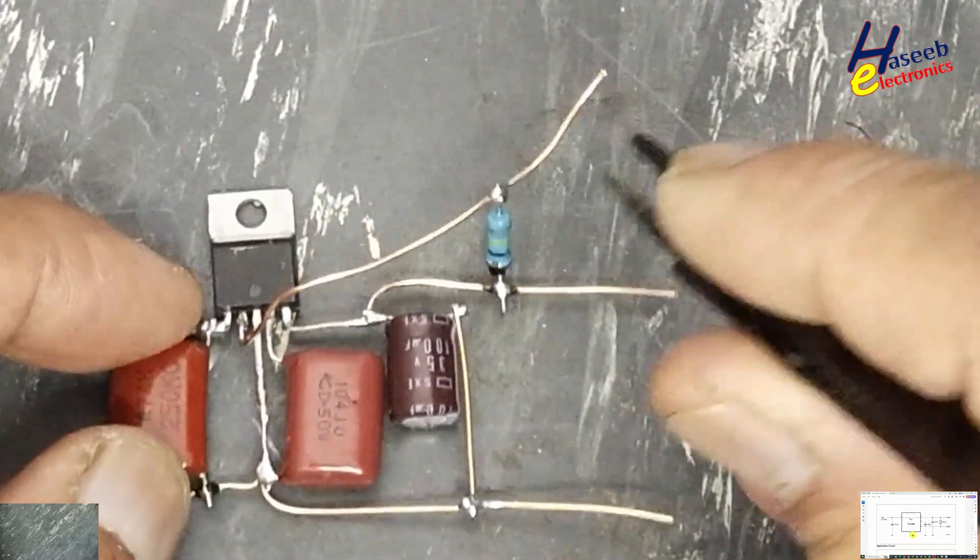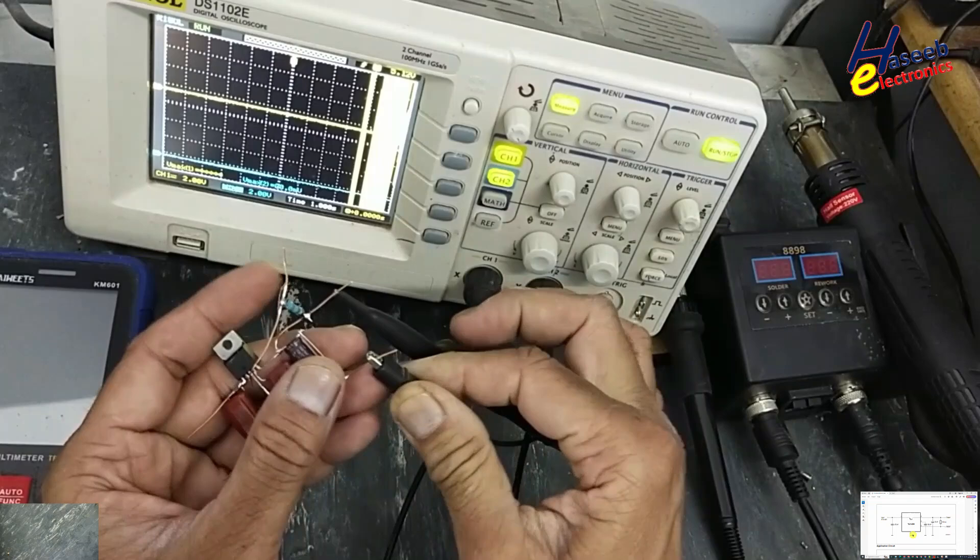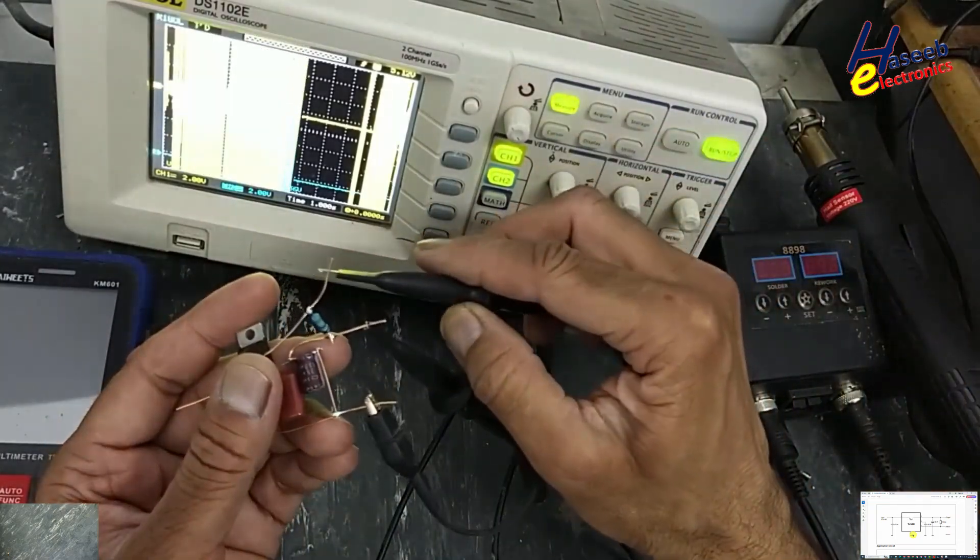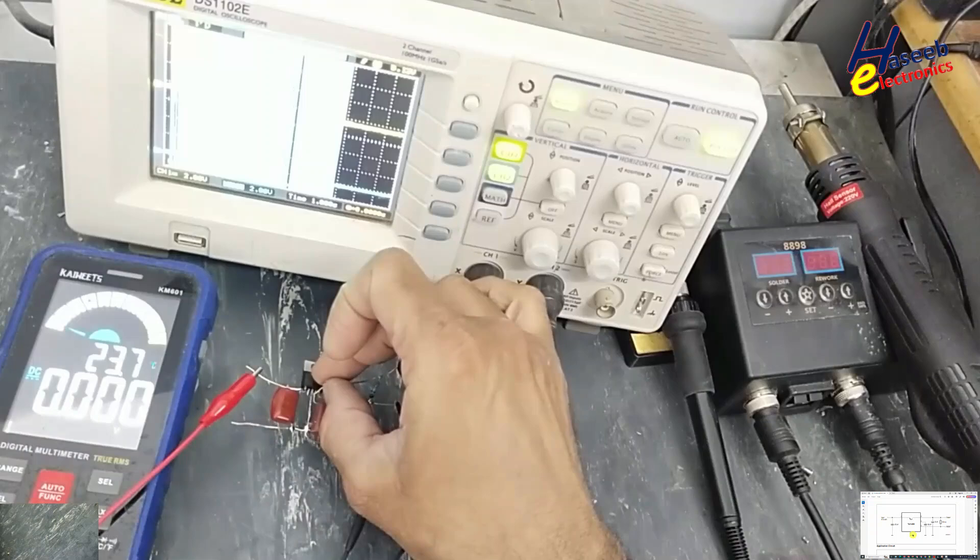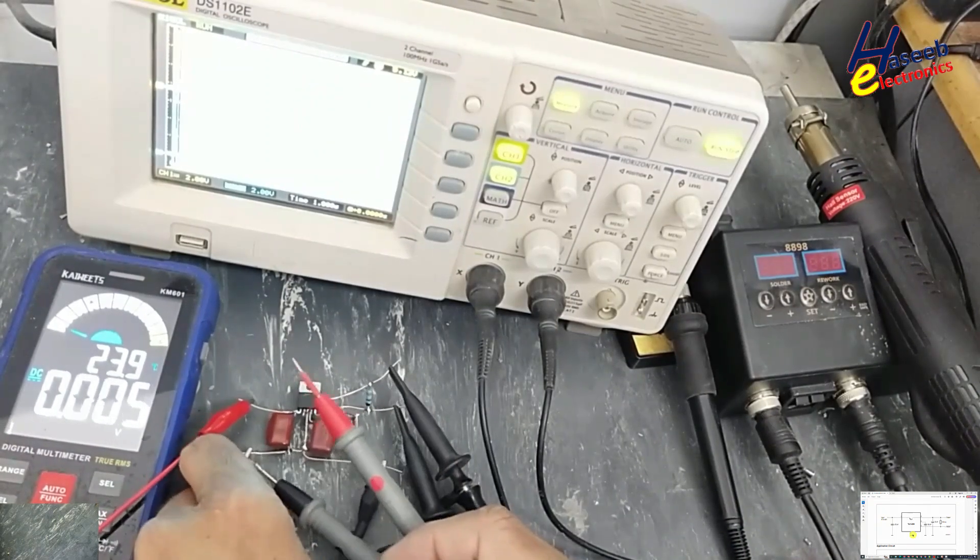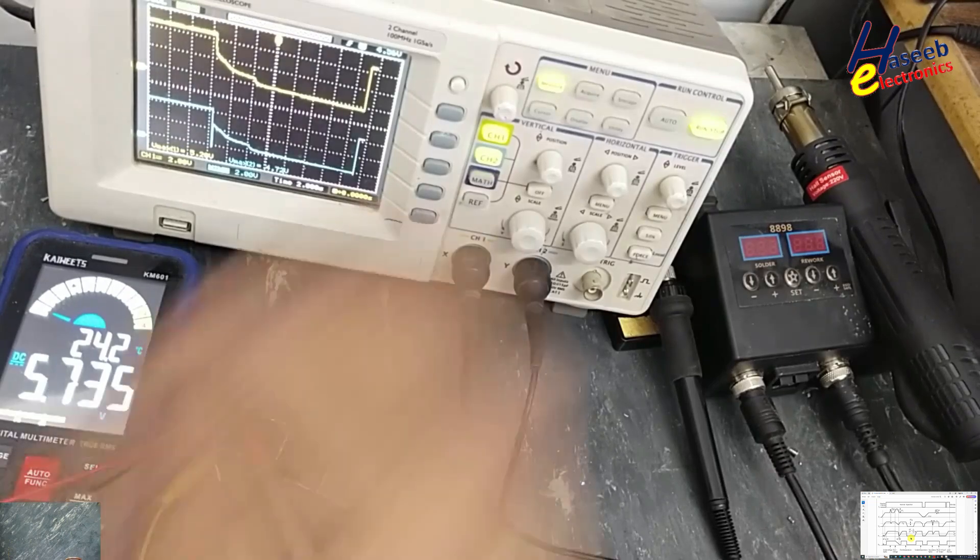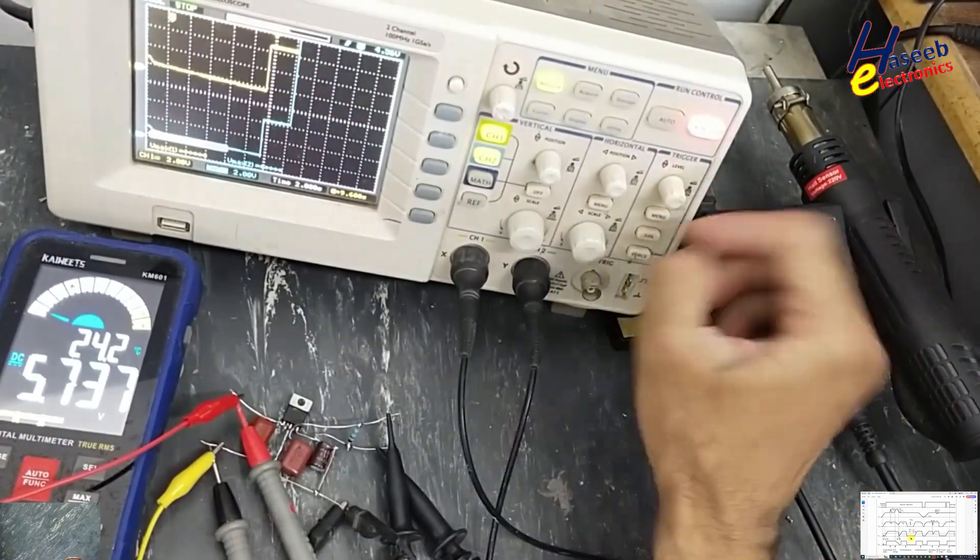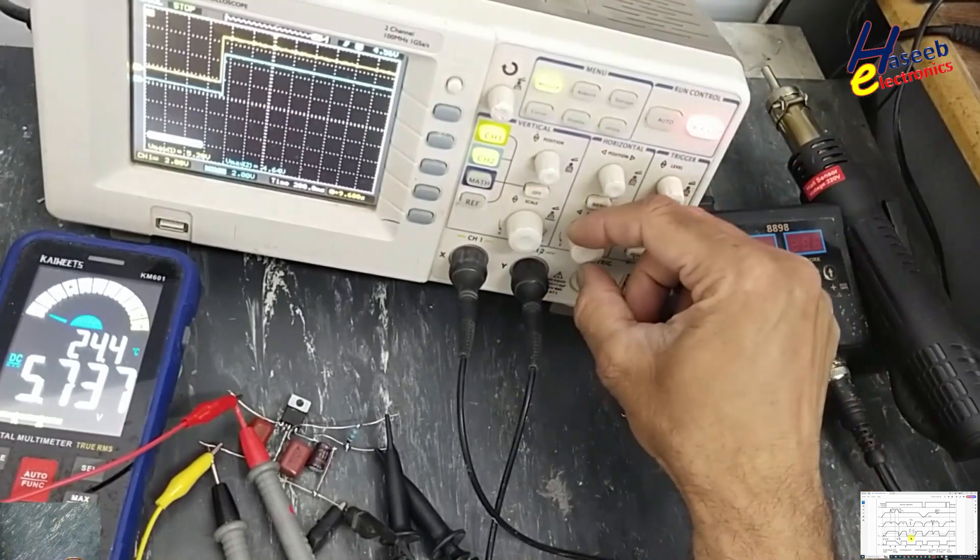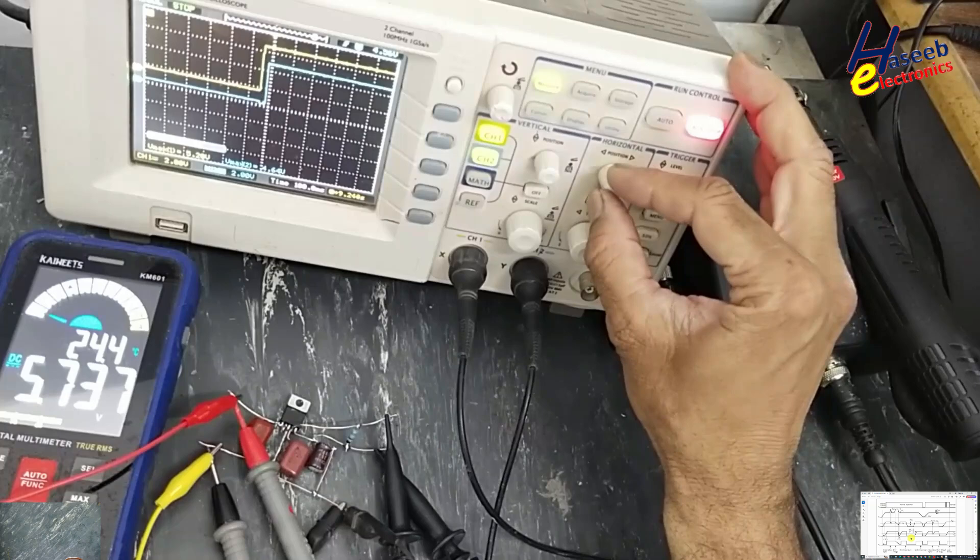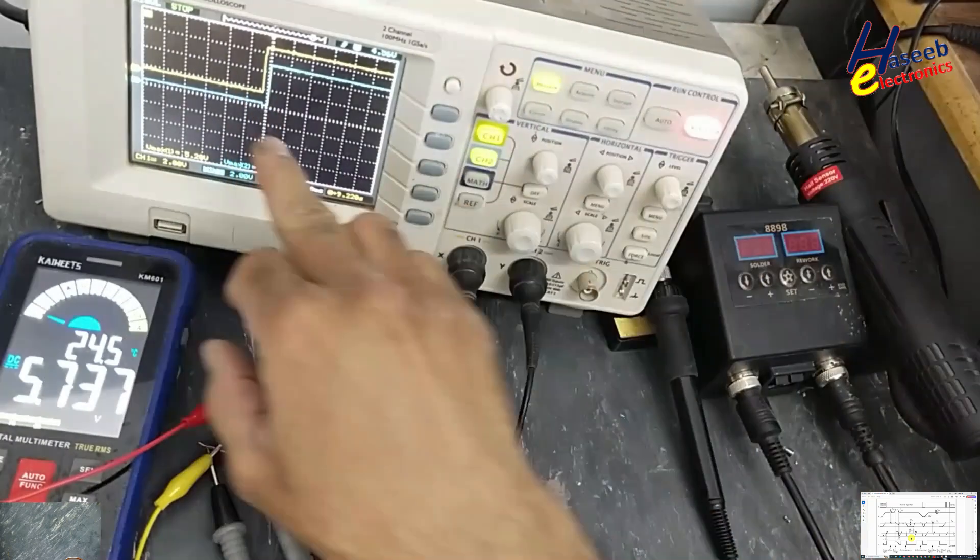Now, channel 1 output, this ground. Channel 2 reset signal, this ground. Channel 2 reset signal. When input is connected to 5 volts, after a specified delay by the delay time capacitor, the reset signal is provided.